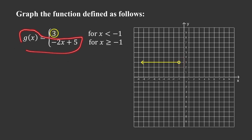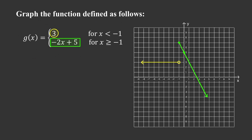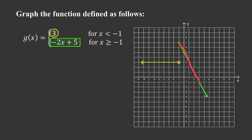Next we sketch the graph of the linear function. It's a decreasing line because the slope, the coefficient of x, is negative. To graph a line we only need two points. When x equals negative 1, we get negative 2 times negative 1 plus 5, which is 7. When x equals 0, we get 5. Since x must be greater than or equal to negative 1, we exclude the left portion and get a ray starting at that point.